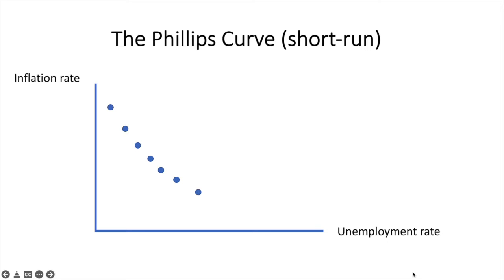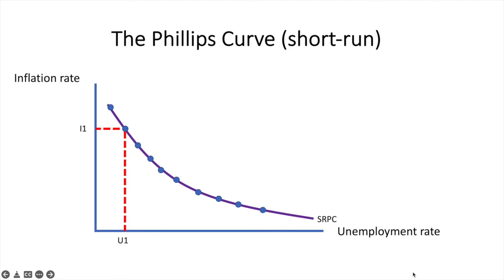We label the curve SRPC and call it the short-run Phillips Curve. The Phillips Curve presents policymakers with combinations to target. For example, the red combination of I1 and U1 demonstrates a point at which unemployment is very low but the rate of inflation is high.